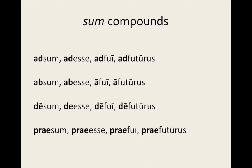For completeness, here are the principal parts of these four verbs. Note that in the third and fourth principal parts of 'absum', 'ab' becomes a long 'a'. Also, in the second principal part of 'desum', the first 'e' becomes a short 'e' instead of a long 'e' when followed by another 'e'.